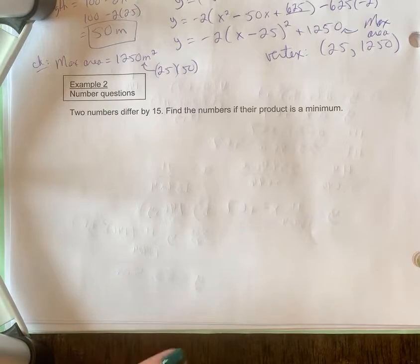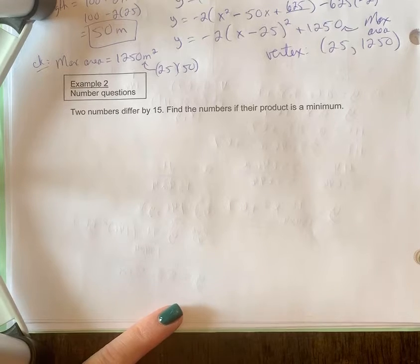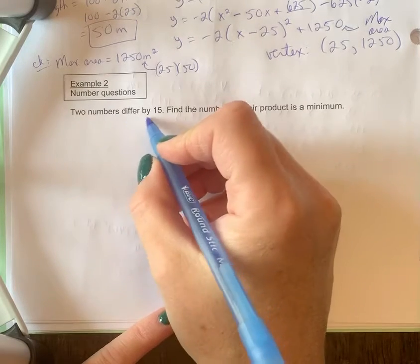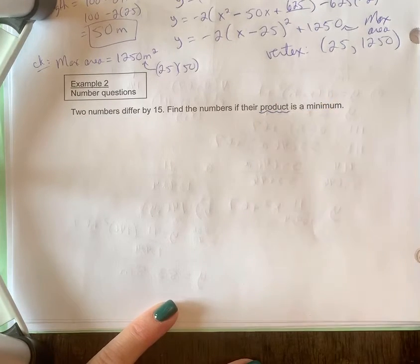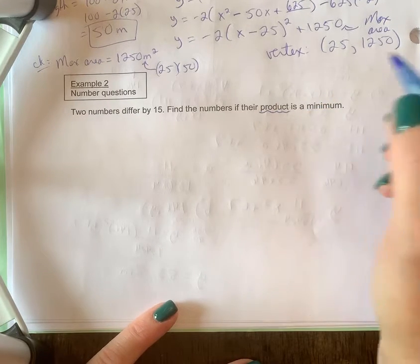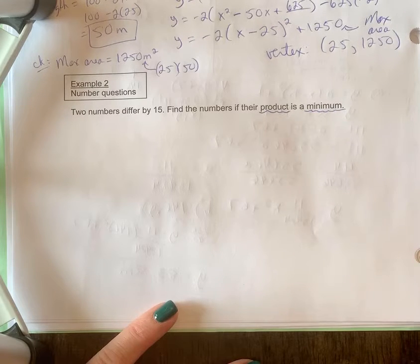Example two of a max-min problem. These are number questions asking about two different numbers. Two numbers differ by 15, find the numbers if their product is a minimum. Product means we're going to multiply the numbers, and the keyword minimum tells me that it's a max-min problem.